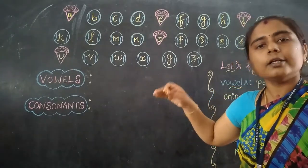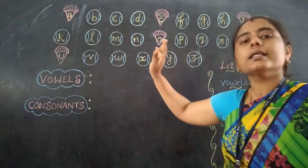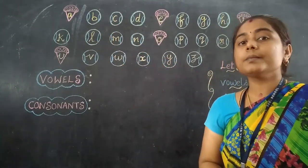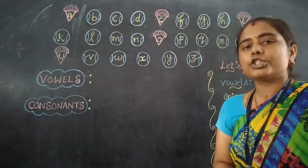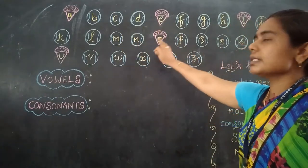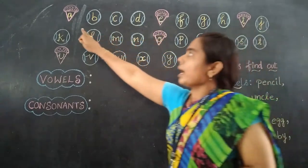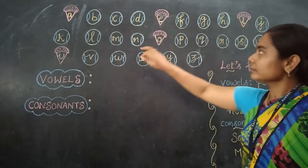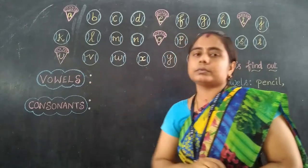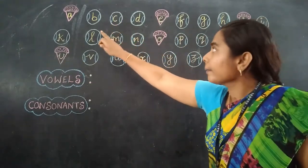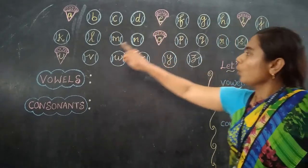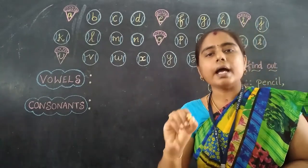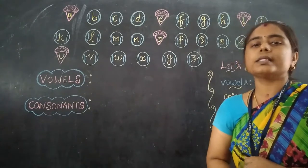So let us learn vowels and consonants. See, I have given ice creams here. Ice creams are the very favourite one for you! See how many ice creams are in this alphabet. Let us count: one - that is A, E, I, O, U. Once again: A, E, I, O, U. So vowels are A, E, I, O, U. We are having five vowels in the alphabet.